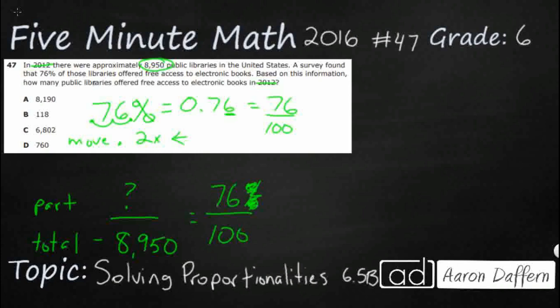Now, we know that they are equal here because the problem tied these two numbers together. They said 76% of them of this 8,950 public libraries. So, when we have an equivalent fraction, this is where we can get into our cross multiplication.